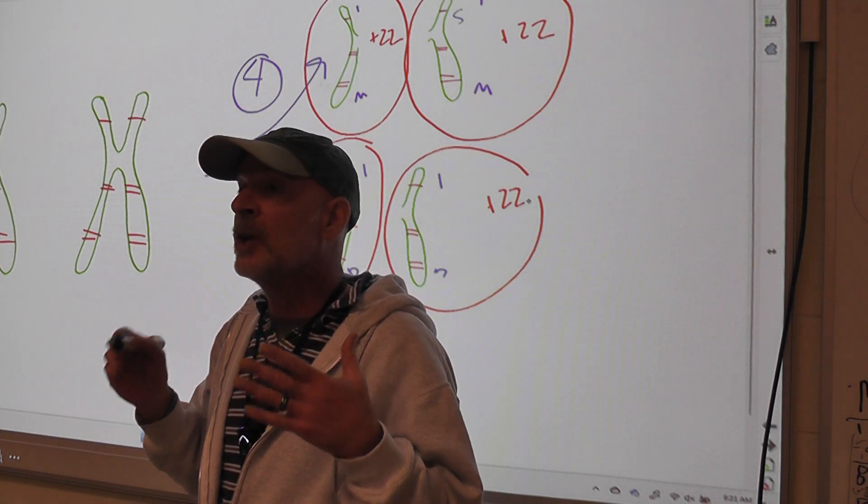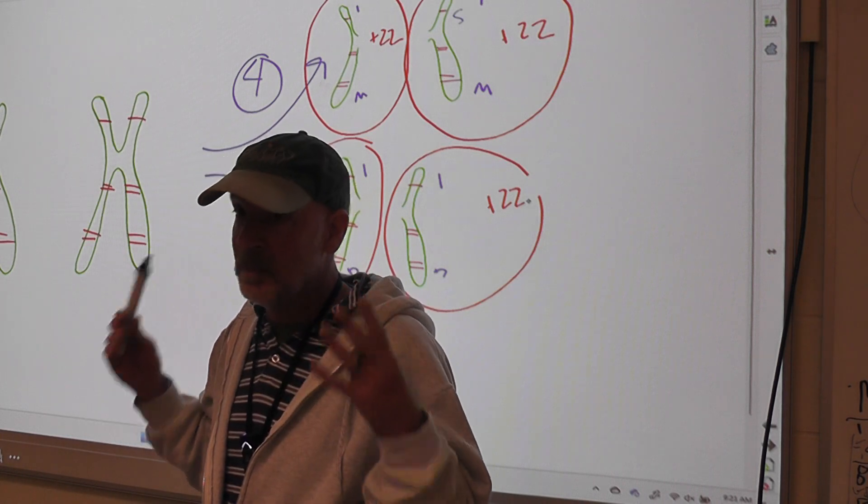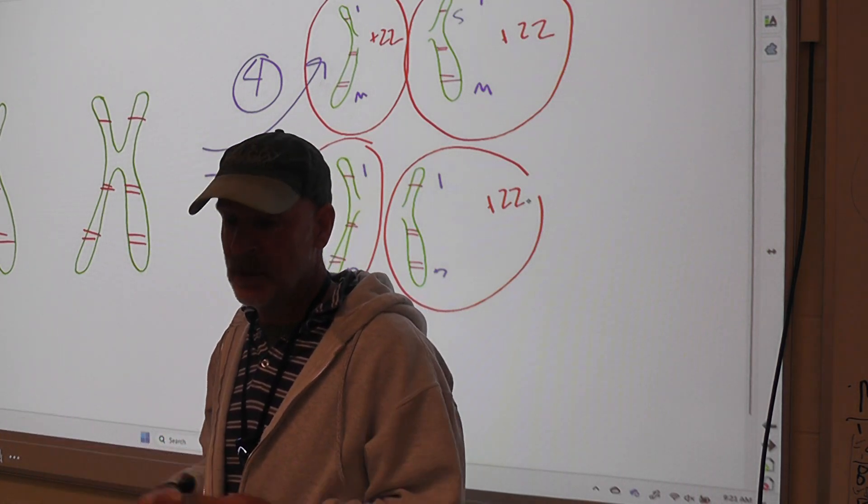Every single time you do this, you're going to come up with a different combination because there's millions and millions and millions of ways to divide up 23 chromosomes.